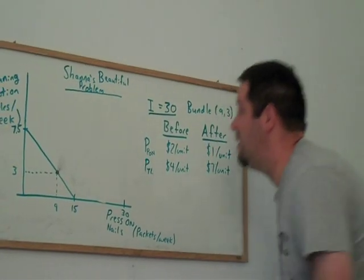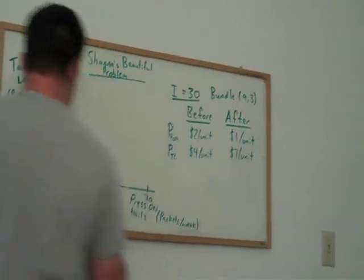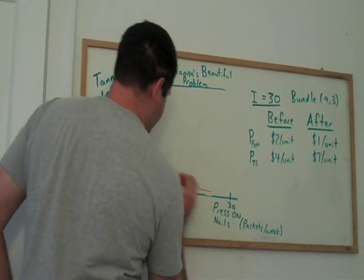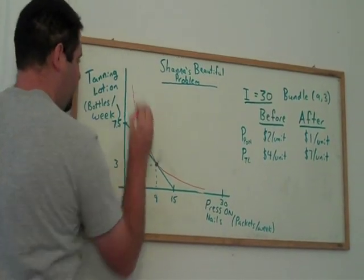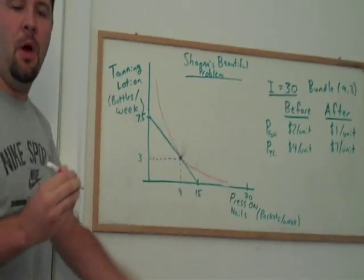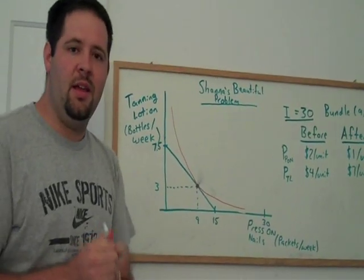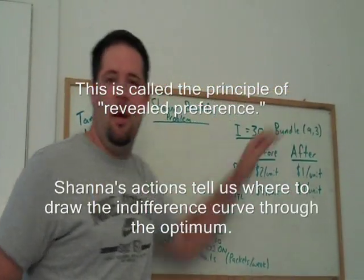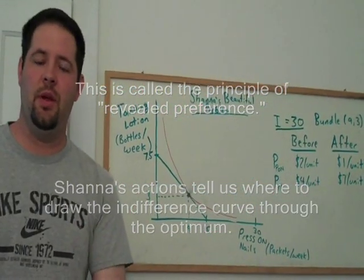If you remember, in the last video, we had an indifference curve that was just tangent to the budget constraint at that optimum. What we're doing is we're taking the information from Shannon's problem. We look at her behavior, and that tells us what she's doing there.